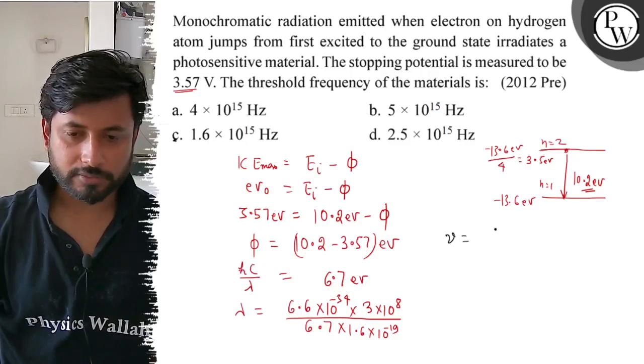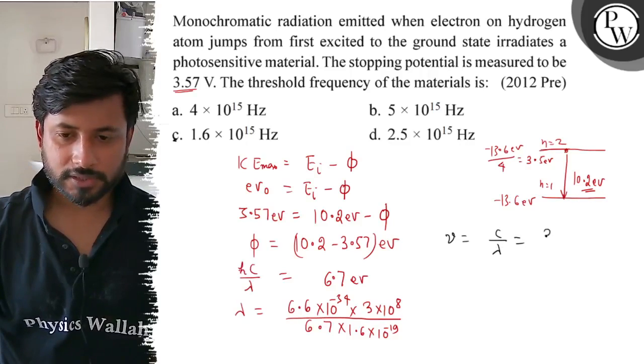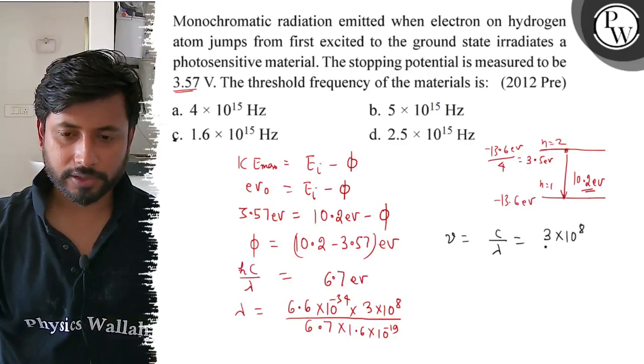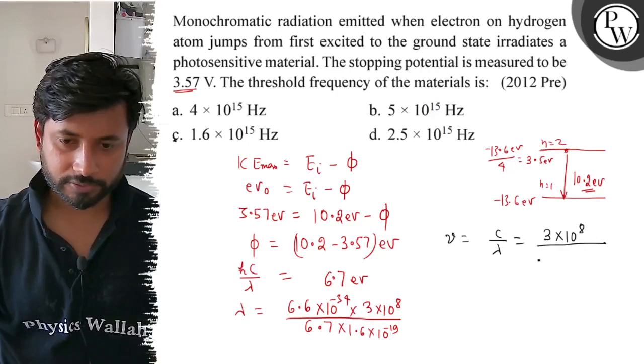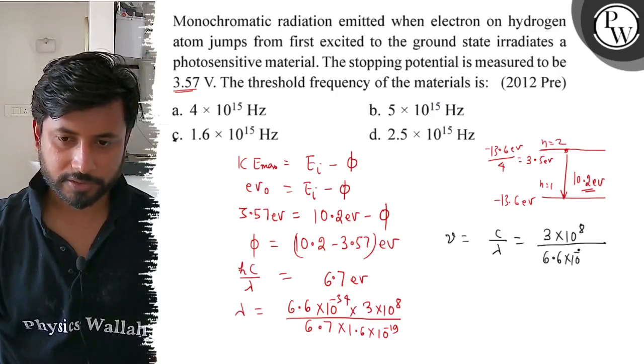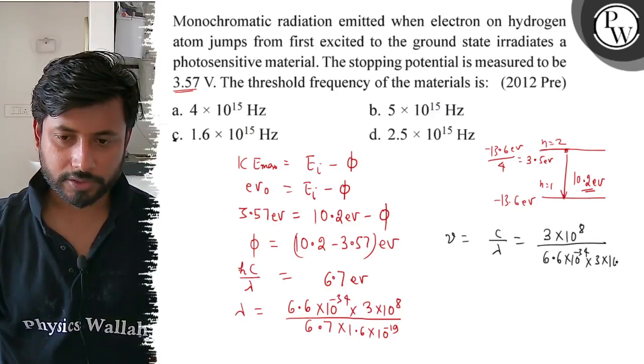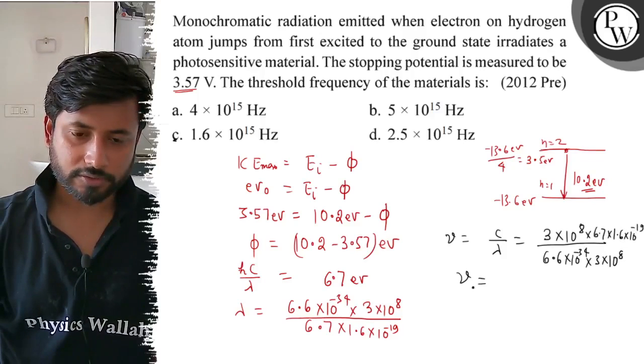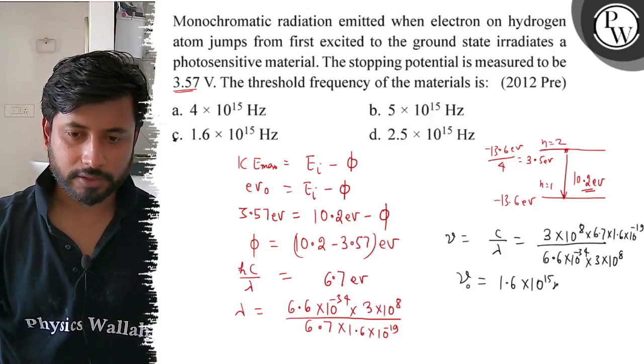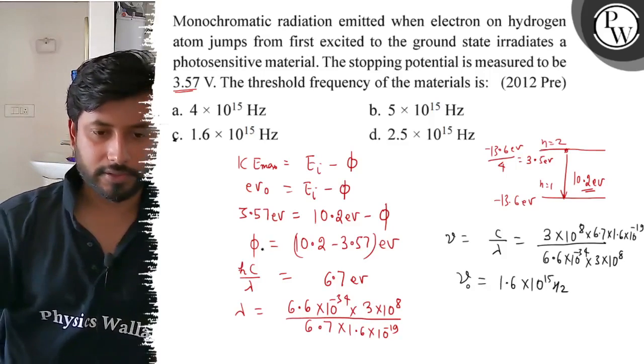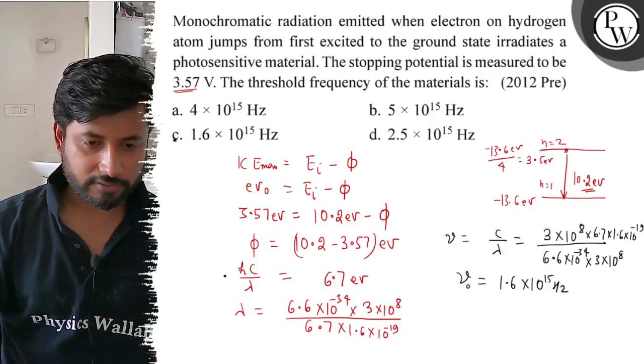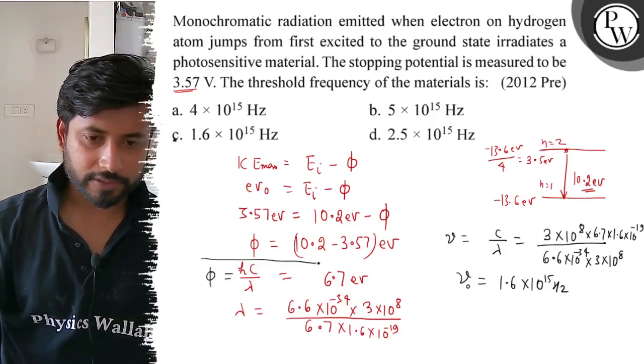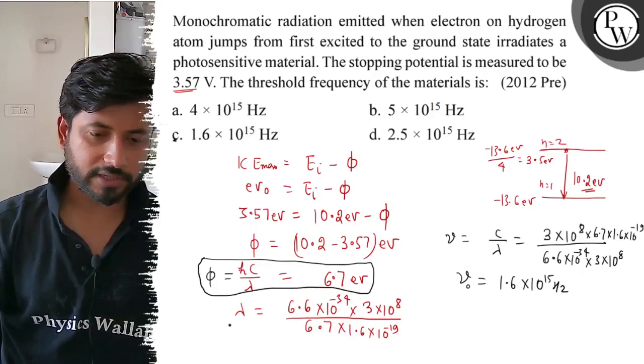Threshold frequency f equals c by lambda. c value is 3×10^8 and lambda value is (6.6×10^-34 × 3×10^8) / (6.7 × 1.6×10^-19). If we solve, the threshold frequency value is 1.6×10^15 hertz.